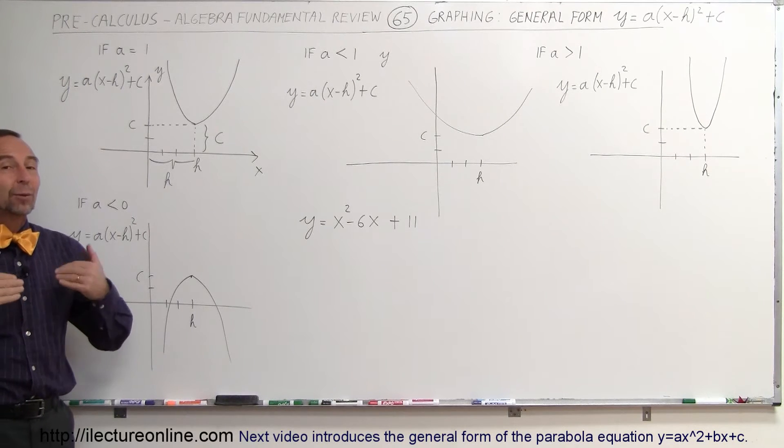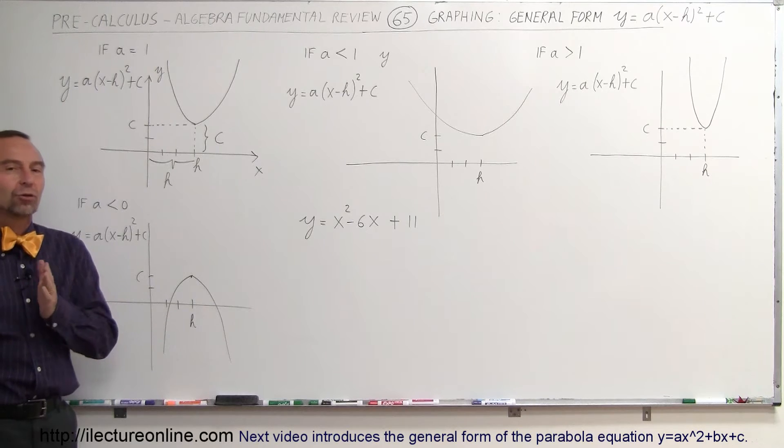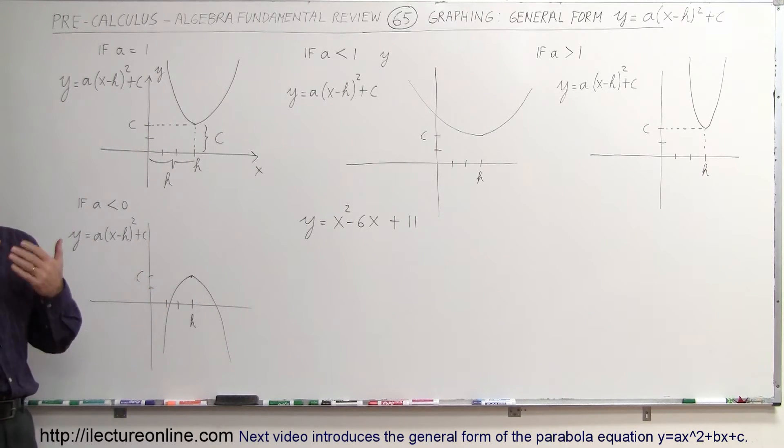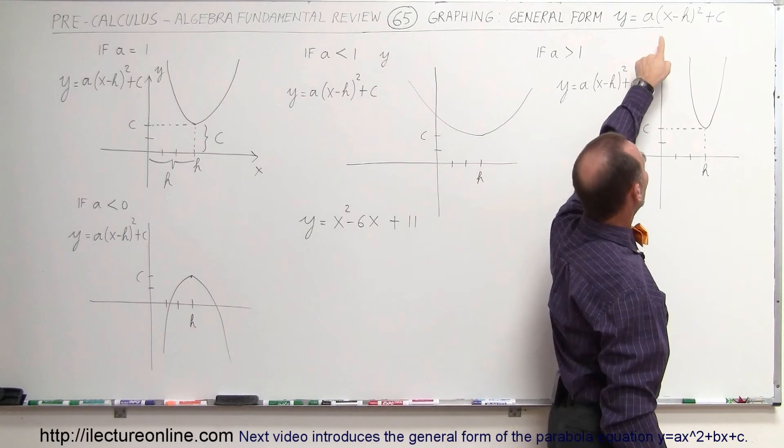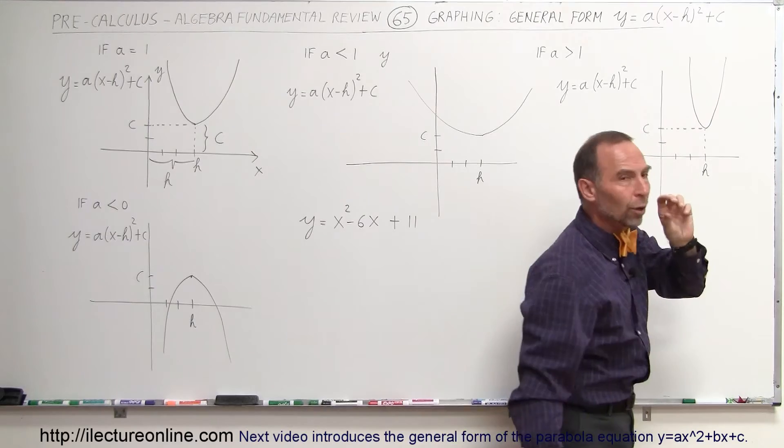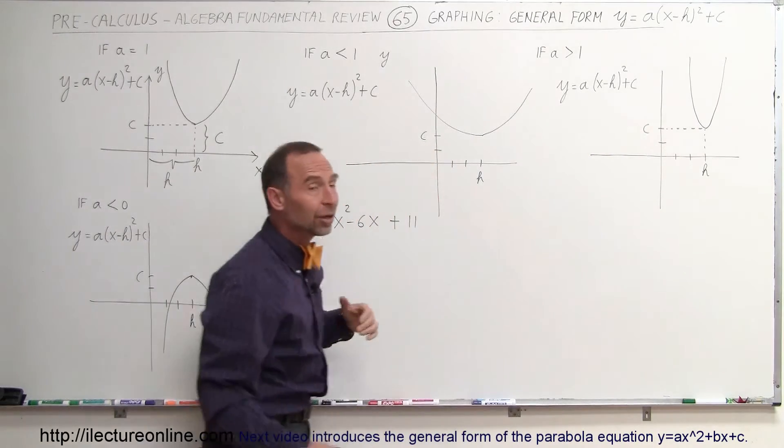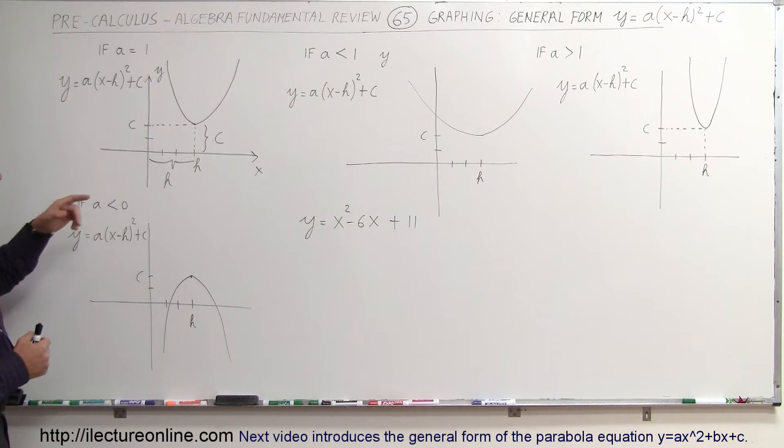Welcome to ElectronLine. Now that we understand what makes a graph shift up and down and what makes a graph shift left and right, we're going to combine the two and write it into general form: y equals the quantity (x minus h) squared plus c. We also want to put a coefficient in front of that, because that also affects what the graph will look like. So the general form of the graph is this.